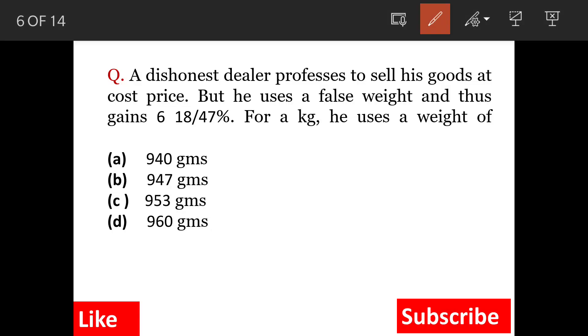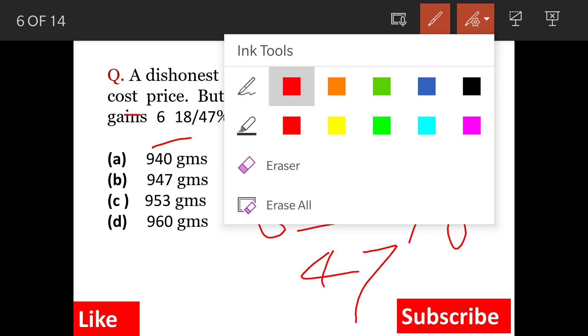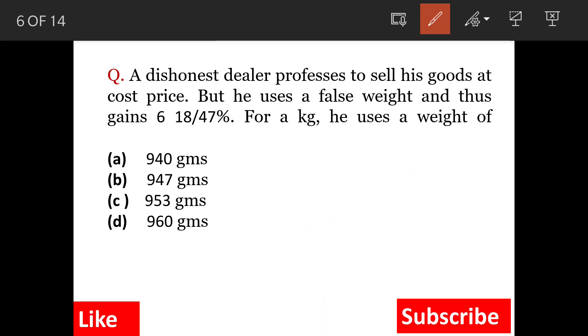A dishonest dealer professes to sell his goods at cost price, but he uses a false weight, thus getting a gain of 6 18 by 47 percent. This is for 1 kg, so he is using a weight of...